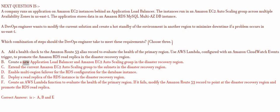C. Create a new Application Load Balancer and Amazon EC2 auto-scaling group in the disaster recovery region. D. Extend the current Amazon EC2 auto-scaling group to the subnets in the disaster recovery region. E. Enable multi-region failover for the RDS configuration for the database instance. F. Deploy a read replica of the RDS instance in the disaster recovery region.